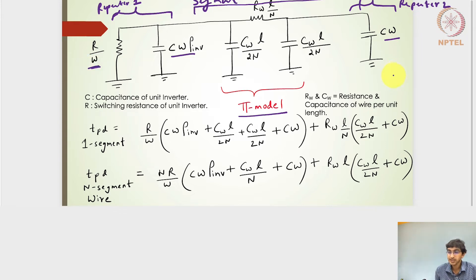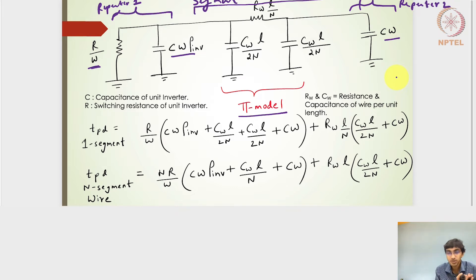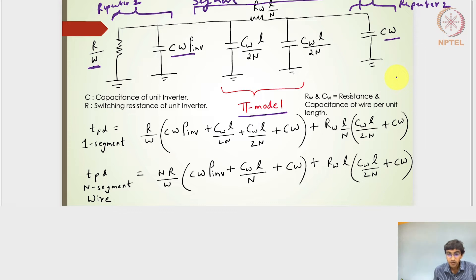If the wire length is segmented into n segments, then n multiplied by this RC circuit representation for one segment gives the whole length of the wire with inserted repeaters. Now, considering this one-segment representation, let's understand the delay aspect.